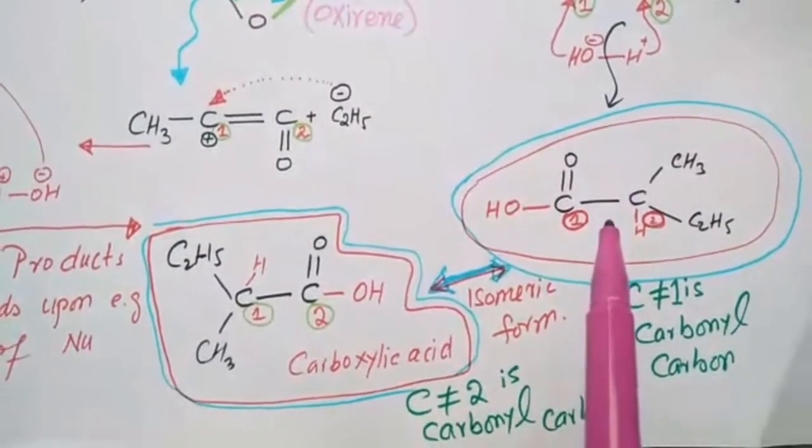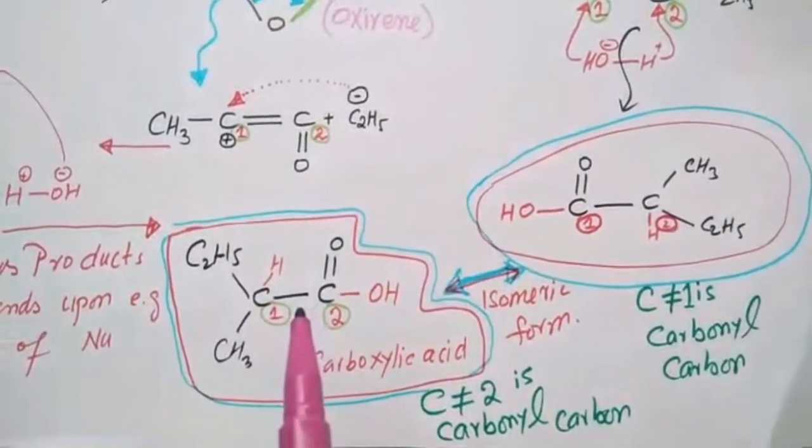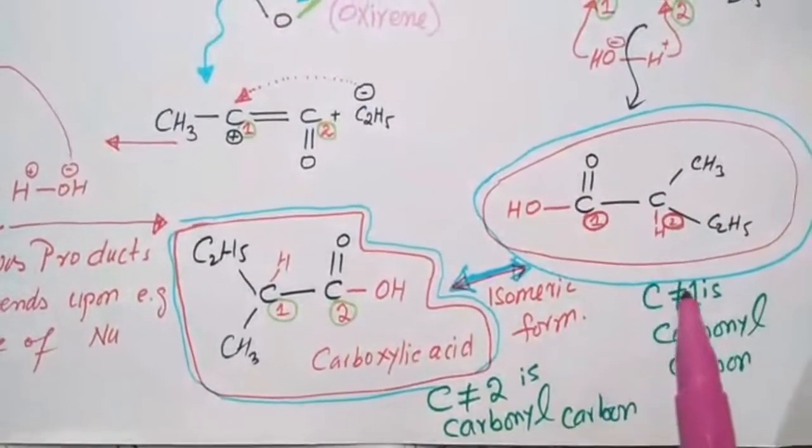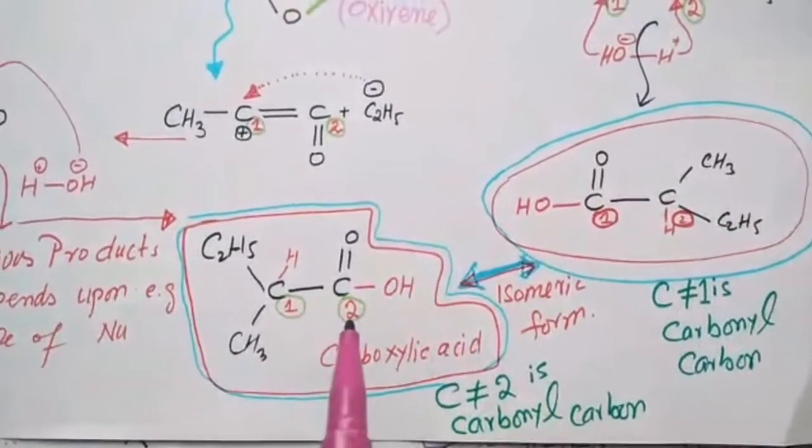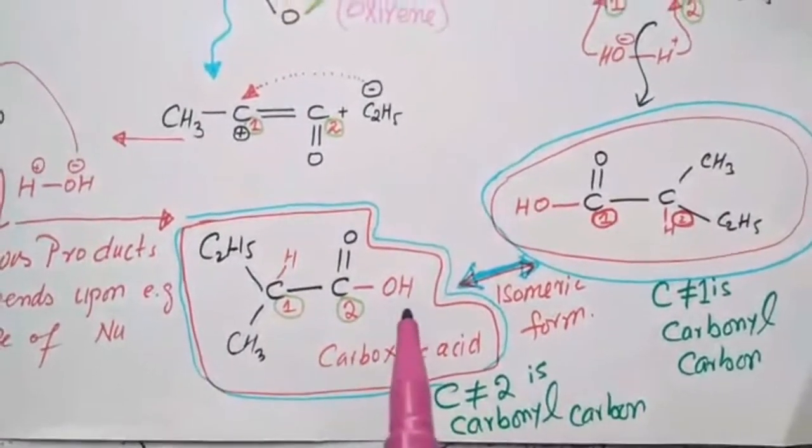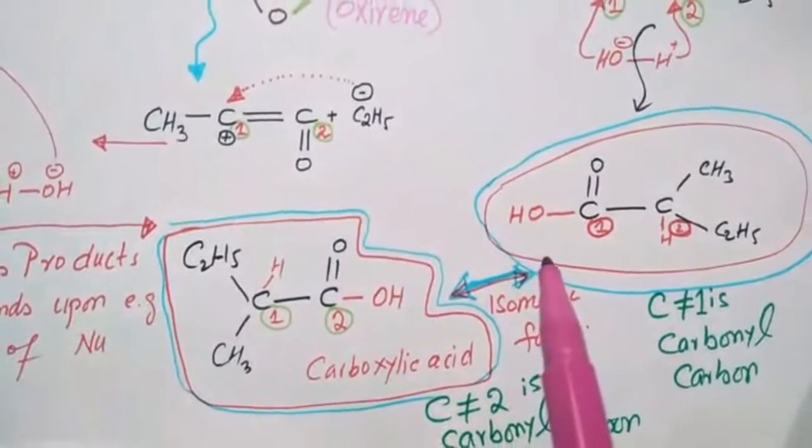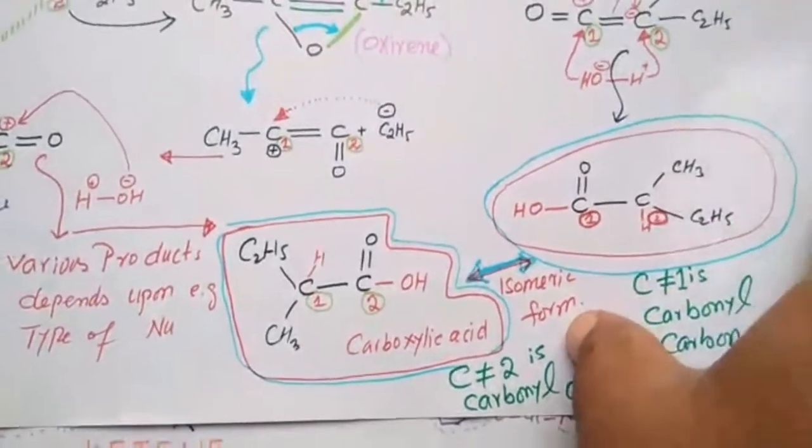Now see, what is the difference between both products? This is the product of water and silver oxide. This is the photochemically induced product. Both are isomers. In this one, on carbon number one there is carbonyl carbon. In this one, on carbon number two there is carbonyl carbon. This is the difference.